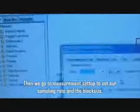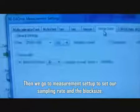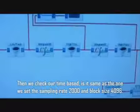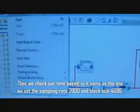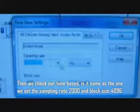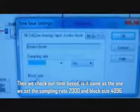Then we go to measurement setup to set our sampling rate and block size. Then we check our time base, is it same as the one we set, sampling rate 2000 and block size 4096.